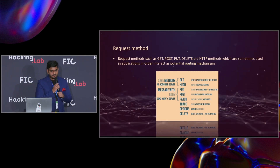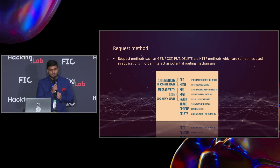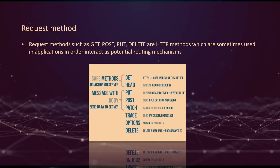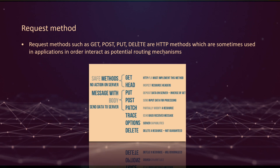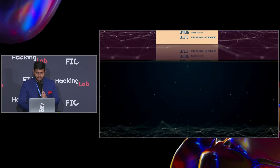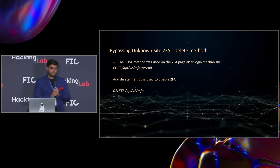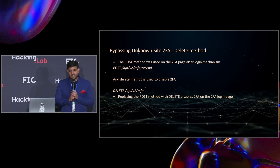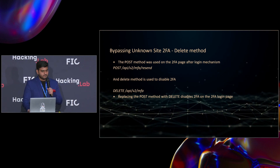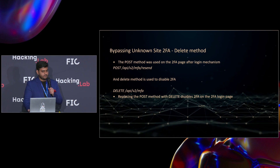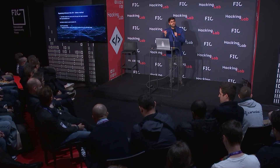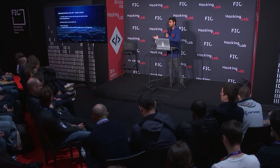Request methods are what a client uses to request a server: GET, HEAD, PUT, POST, PATCH, TRACE, OPTIONS, and DELETE. In one scenario we had an MFA, and we were able to bypass or delete the complete MFA mechanism by simply using the DELETE method, because developers were not checking for it. We were able to totally manipulate the application into thinking this is a legitimate user requesting to disable the 2FA.